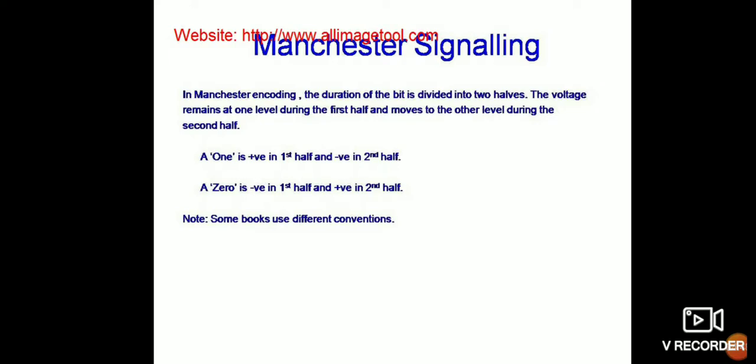One more important code is Manchester signaling. In Manchester encoding, the duration of each bit is divided into two halves. The voltage remains at one level during the first half and moves to the other level during the second half. A 1 is positive in the first half and negative in the second half; a 0 is negative in the first half and positive in the second half.